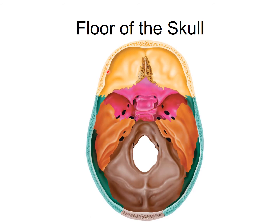Here we have the frontal bone. And this small bone here — what I'm outlining — is called the ethmoid bone. The ethmoid bone has two features: this projection here is called the crista galli, which means coxcomb because it sort of looks like the comb of a rooster. And then here, with all these little small holes, this is the cribriform plate.